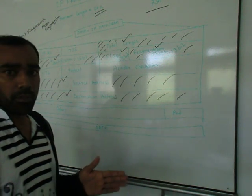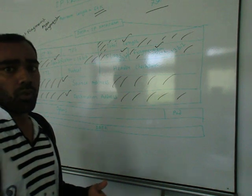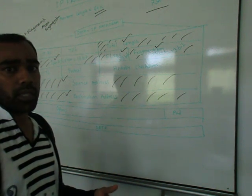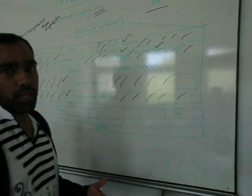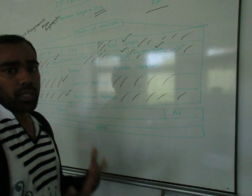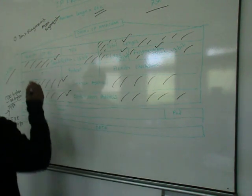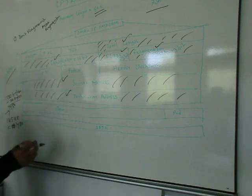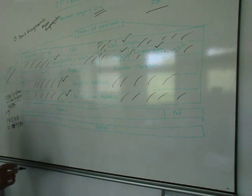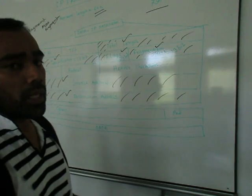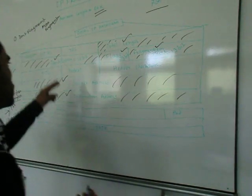Now let me show you how IP fragmentation works. First, I want to talk about the IP header. An IP packet contains a header with information necessary to know where to send the packet and what to do with it. The IP header is 20 bytes and contains the IP version, the header length, and other information.